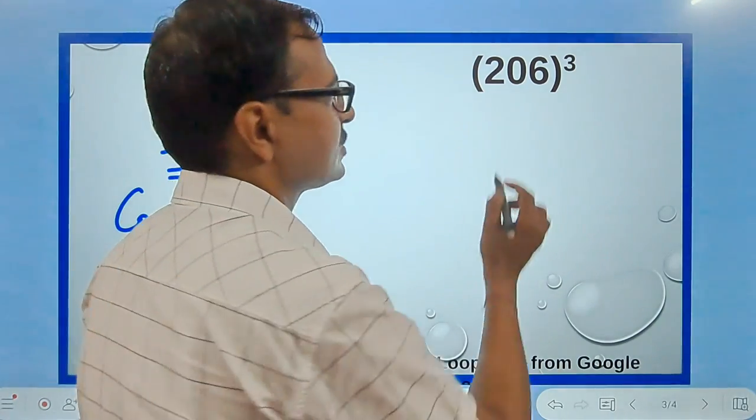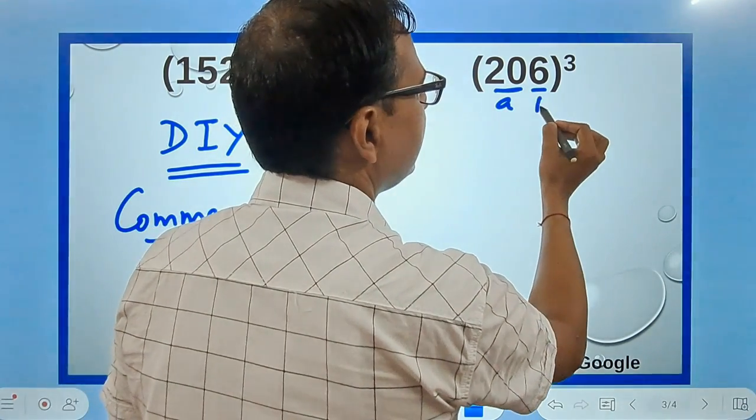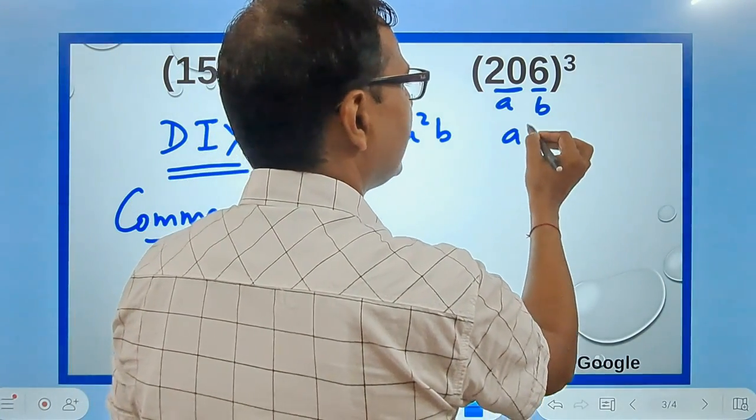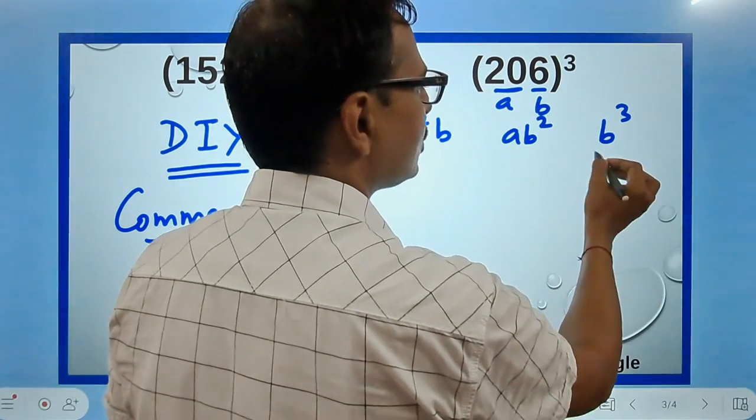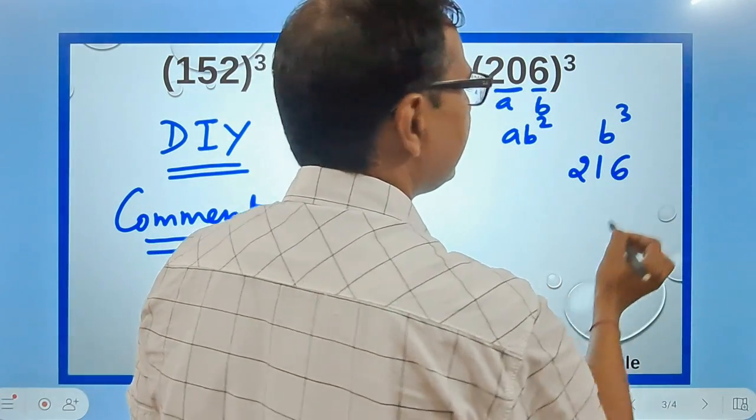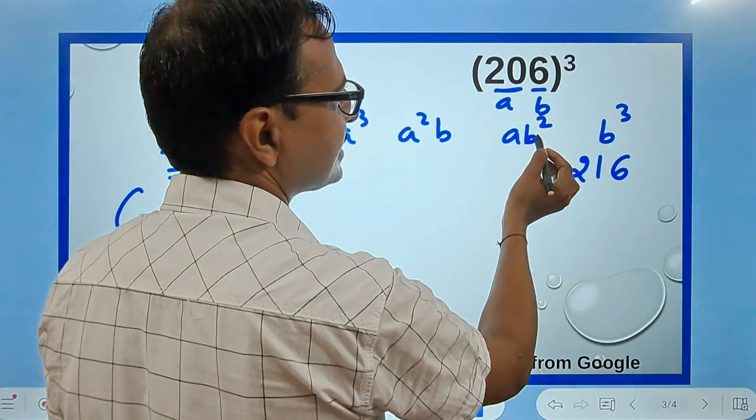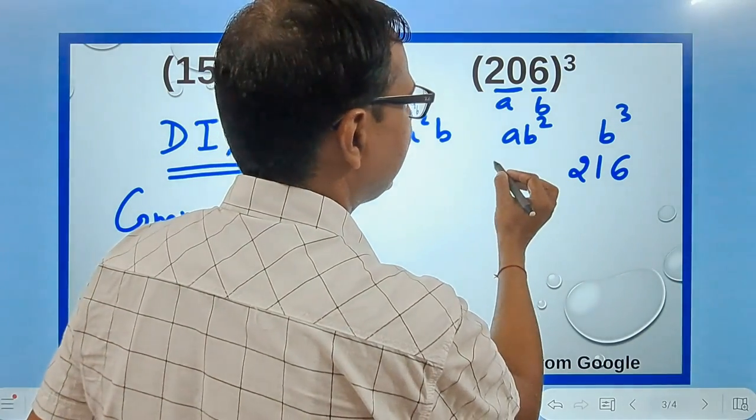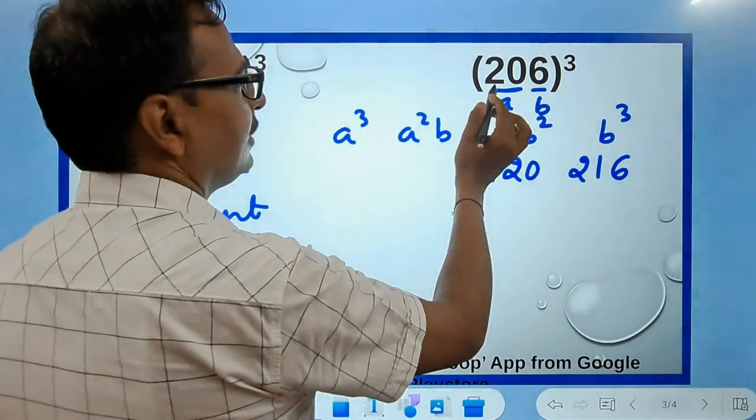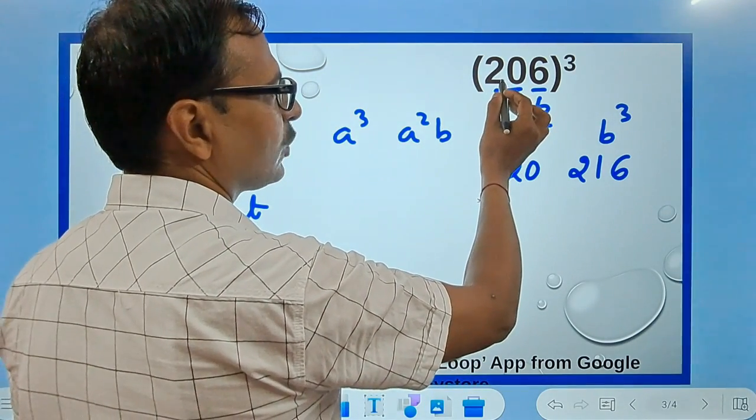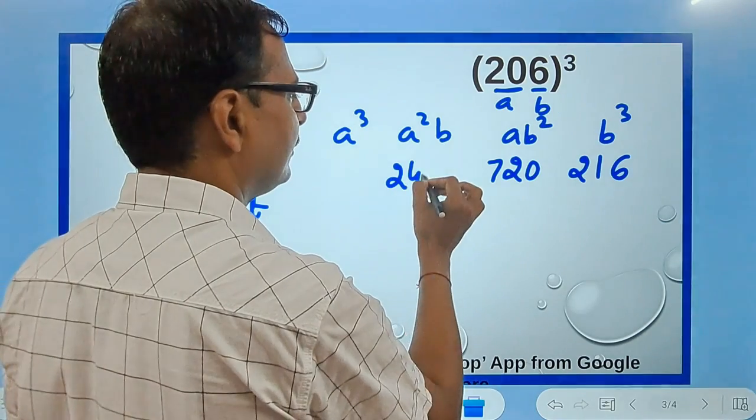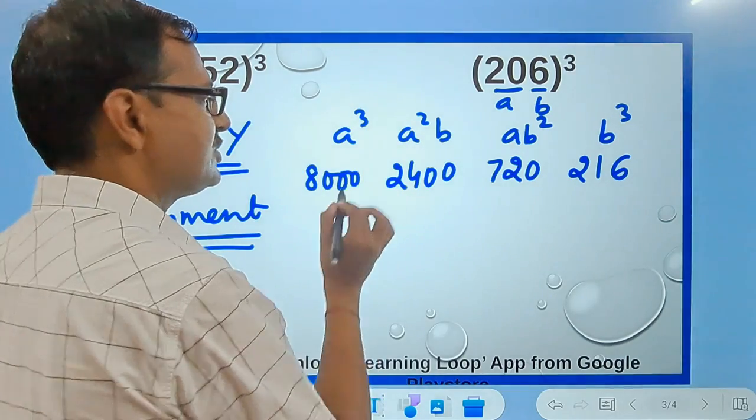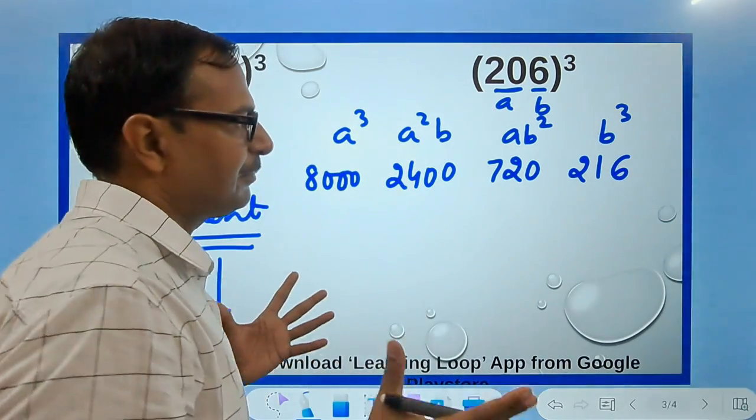I'll do 206. This is a, and this is b. I'll write the four numbers: a³, a²b, ab², and b³. 6³ is 216, so I'll write it here. 6² is 36 times 20, 36 times 2 is 72, so 720. Then a²b, 20² is 400, 400 times 6 is 2400. And then 20³ is 8000.